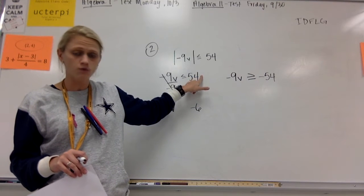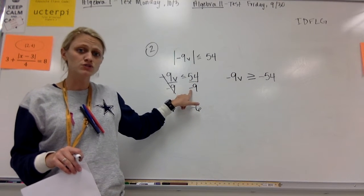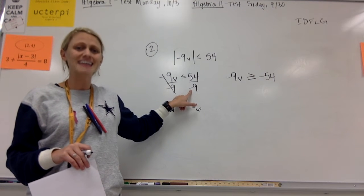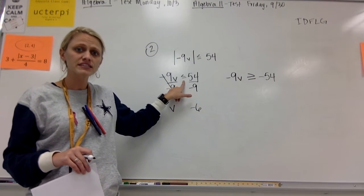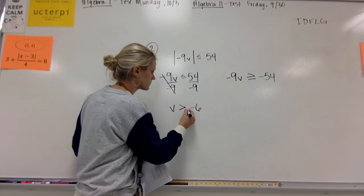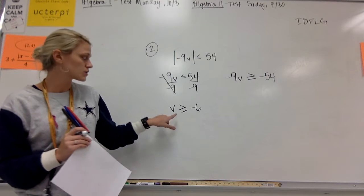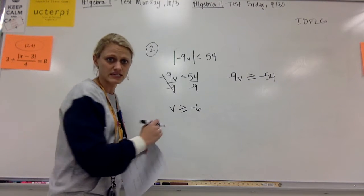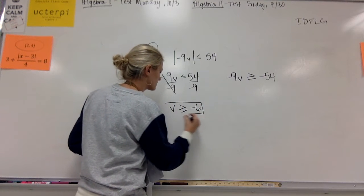I'll say that again. If you multiply or divide by a negative number, it doesn't matter what this 54 is. It only matters what you divide by. If you multiply or divide by a negative number, this symbol has to flip around. So instead of a less than, we're going to have V is greater than or equal to a negative 6.